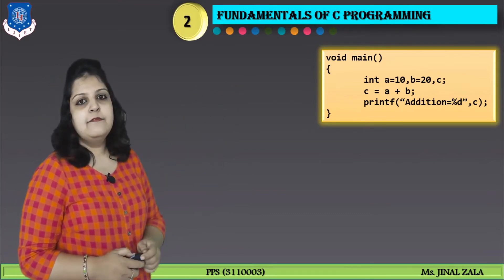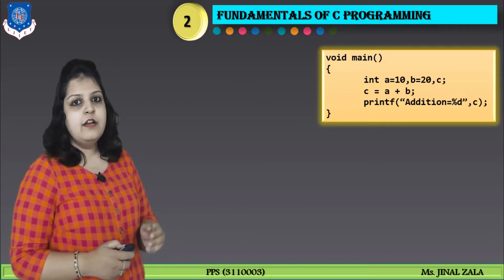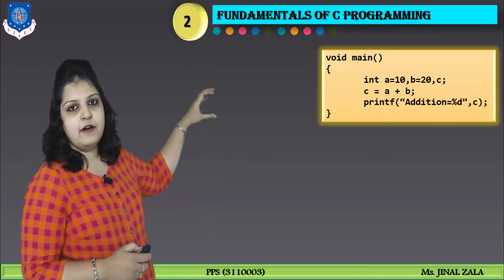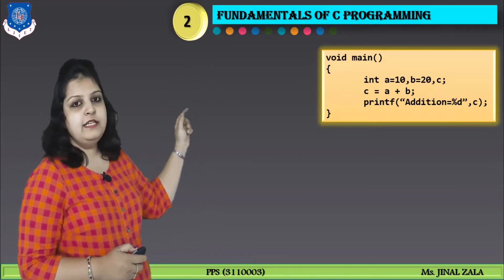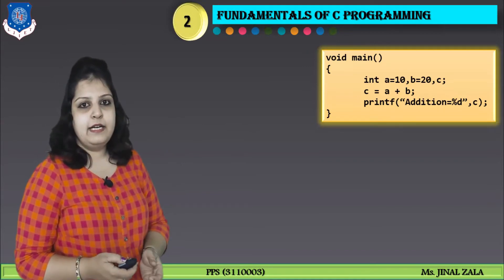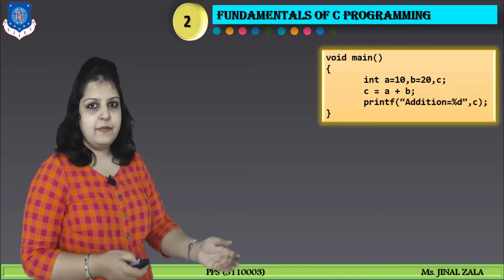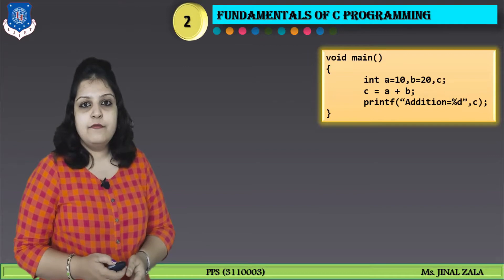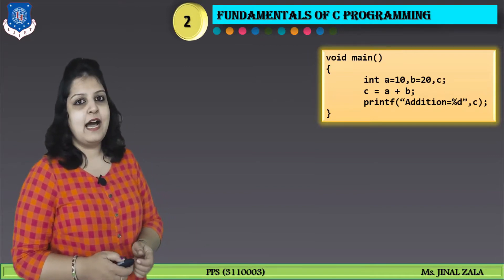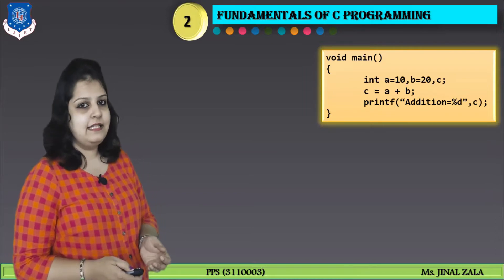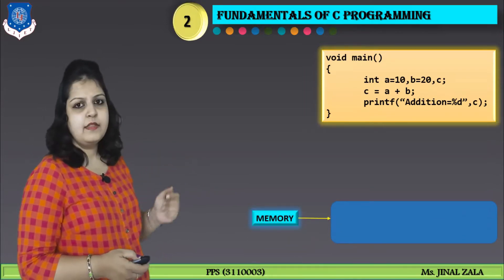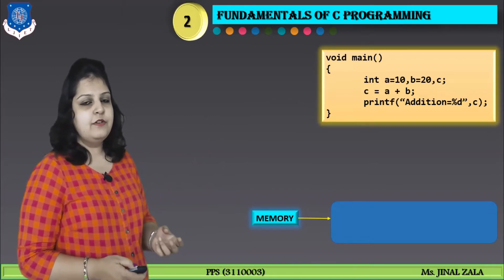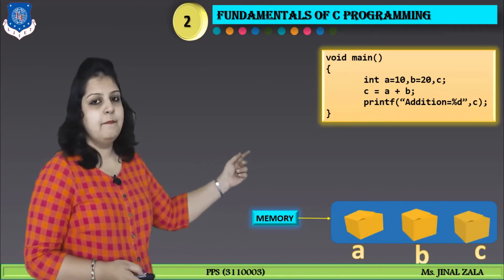Here, void main — main is a function and it is a mandatory function. We have to write all the statements of our program compulsorily in this function. What is integer? Integer is a data type. We have many different data types like float, character, etc. And A, B, and C are variables. Variables are used to store data in memory. This is memory, and in this code we have three variables: A, B, and C. So A, B, and C will be stored in memory.